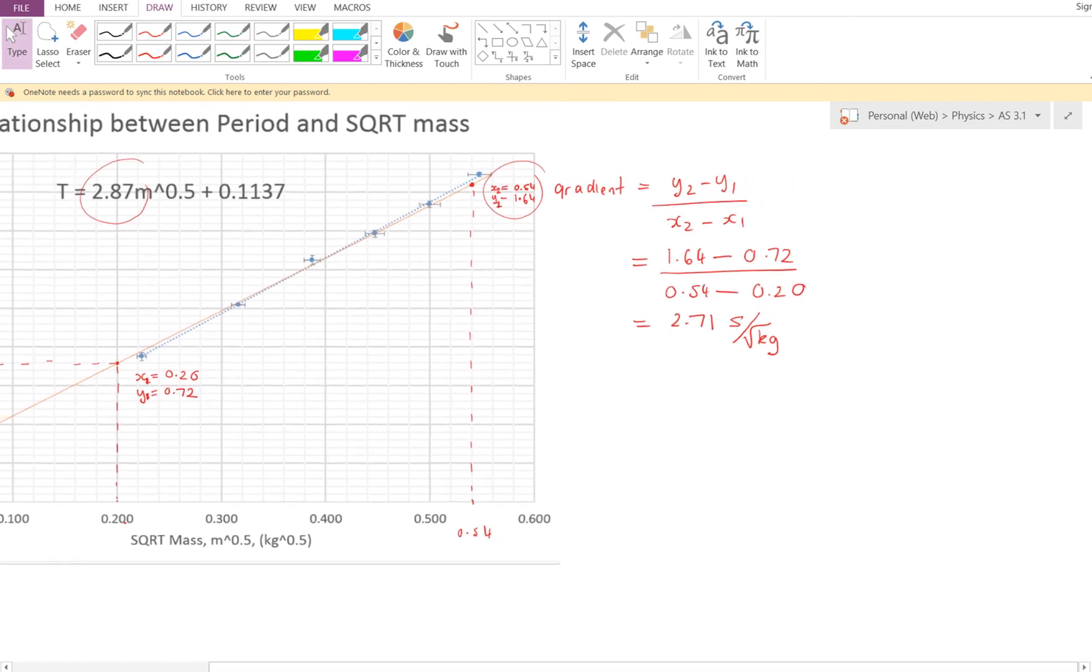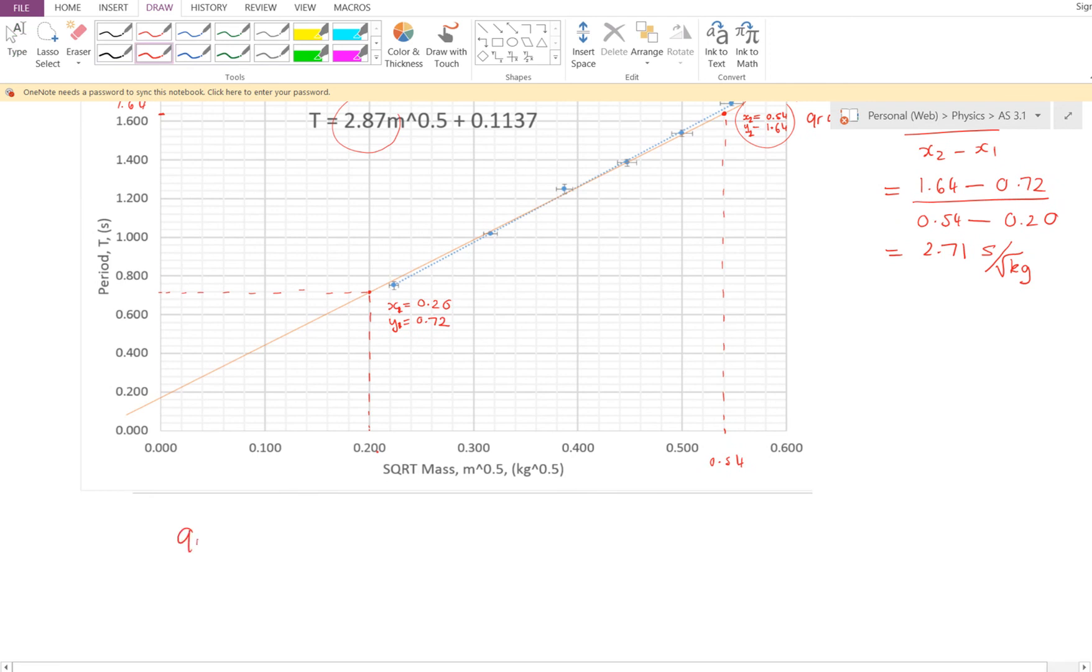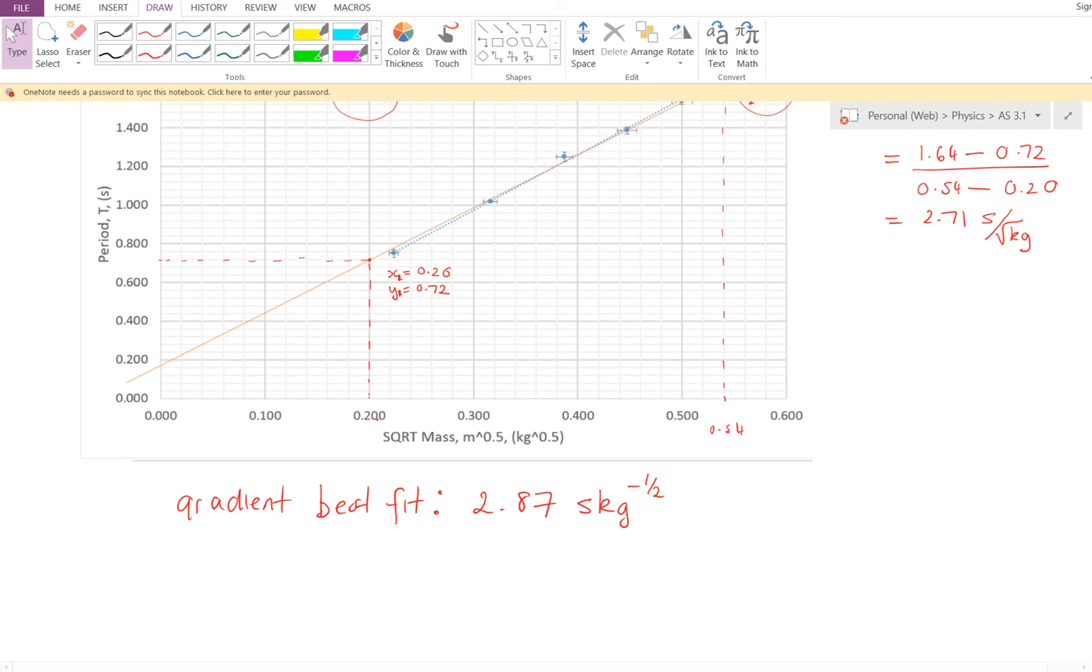So we can probably summarize this now. We've got a gradient for our best fit line of 2.87, and it's seconds per square root kilogram. I think square root kilogram is the same as kilogram to the power of a half, and because it's per square root kilogram, we'll call it s kg to the power of negative a half. It doesn't actually matter how you label it, you can label it either way, it's no big deal. Now the gradient for the worst fit line is my 2.71, and again it's the same units, seconds kilograms to the power of negative a half.